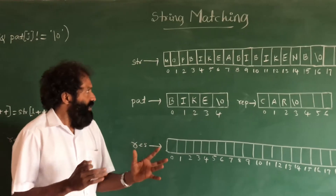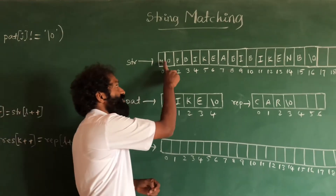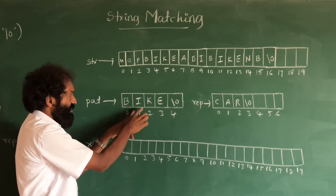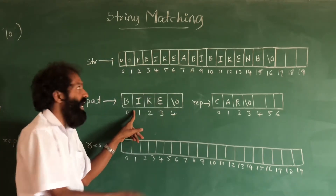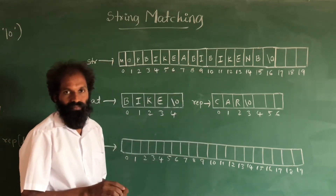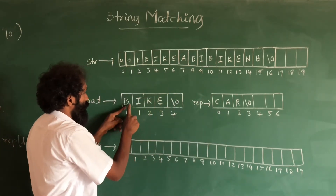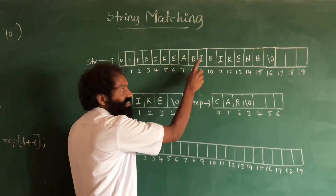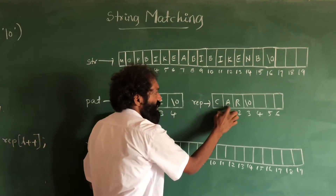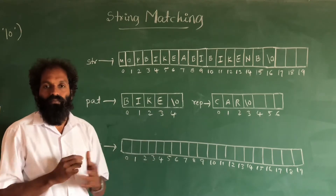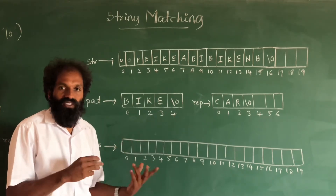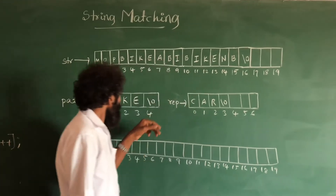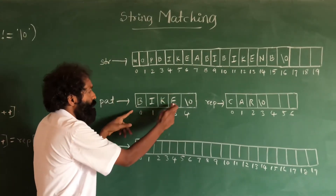The problem statement is: in the main string, wherever this substring pattern is present, we have to remove it and put the replacement string. For example, if 'd-i-k-e' is present in the string, we have to remove it and put 'c-a-r'. This is our problem and we have to write code for it.